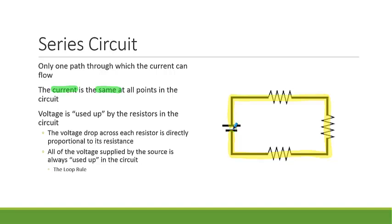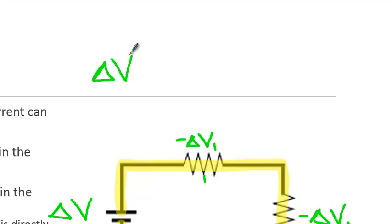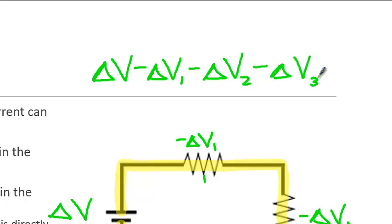The voltage we have is used up by the resistors in the circuit. The voltage source supplies a positive voltage, and along the way some of the voltage is used up by each resistor — we call these negative delta V1, negative delta V2, and negative delta V3. If we add all of those up, they equal zero. This is called the loop rule, and it is an energy conservation statement: all the voltage supplied by the voltage source minus the individual voltage drops across each resistor equals zero.